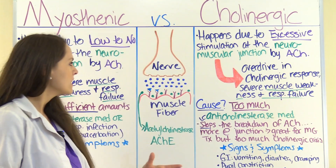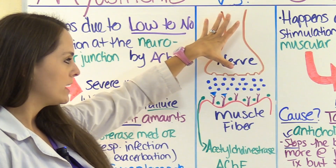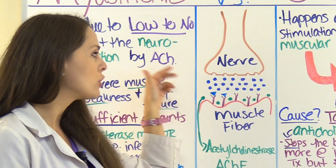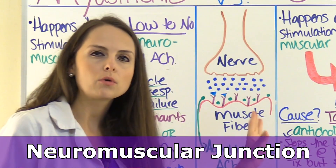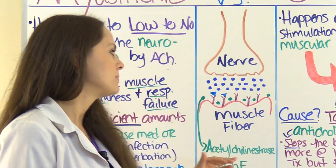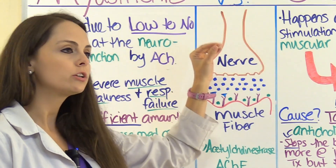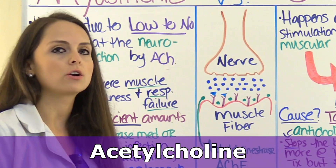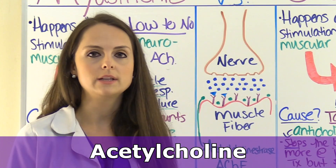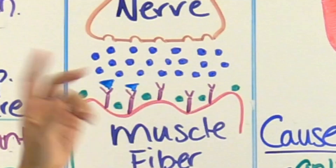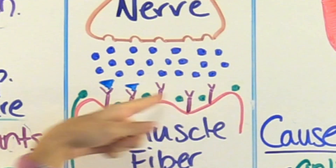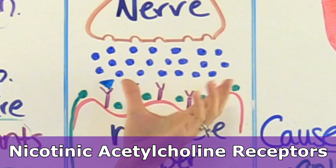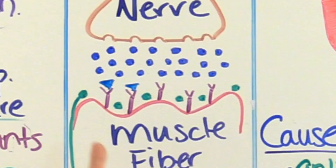Here we have a neuron, a nerve, and we have a muscle fiber. These two meet together at what is called the neuromuscular junction, and that's what we're really interested in. Whenever this nerve, which is a cholinergic fiber, is stimulated by the central nervous system, it releases a neurotransmitter called acetylcholine. Acetylcholine goes down to these receptors, which are called nicotinic acetylcholine receptors, and it causes the muscle fiber to contract.